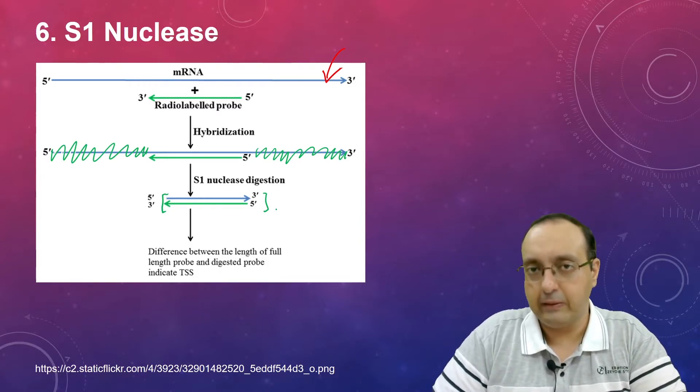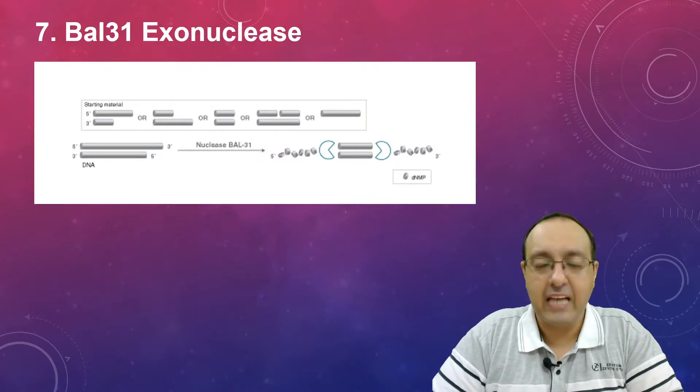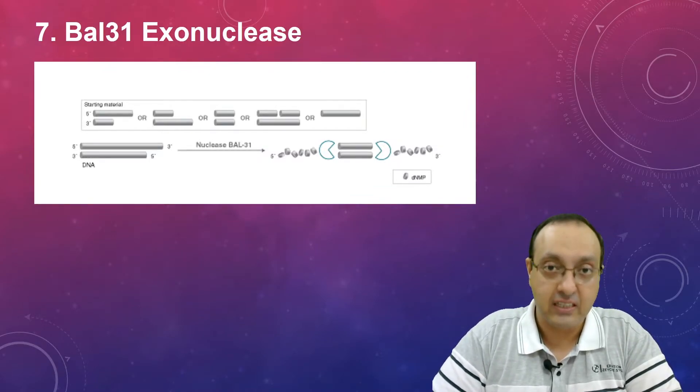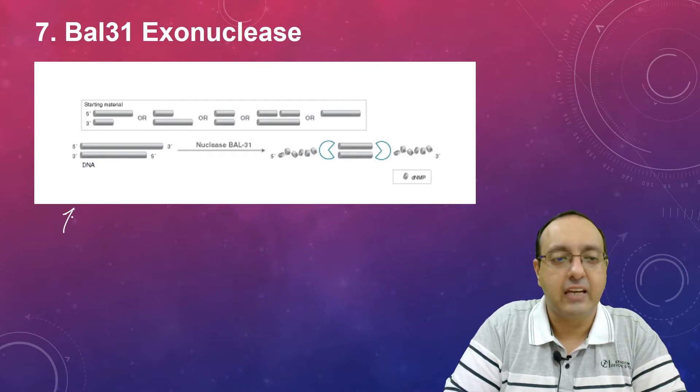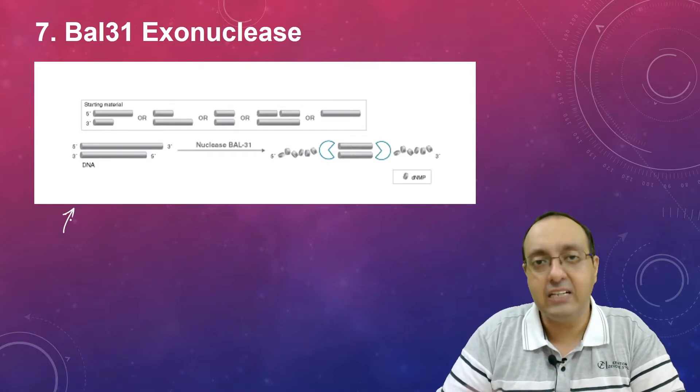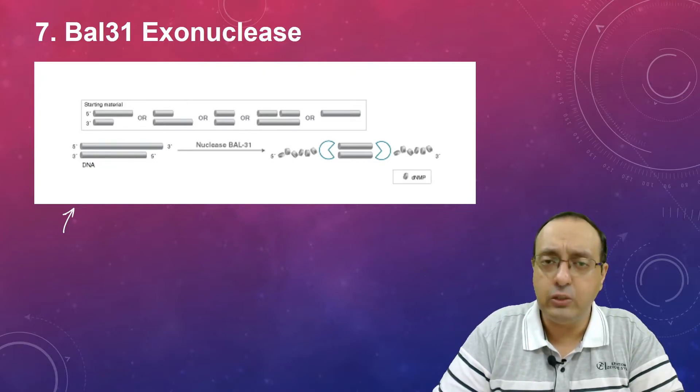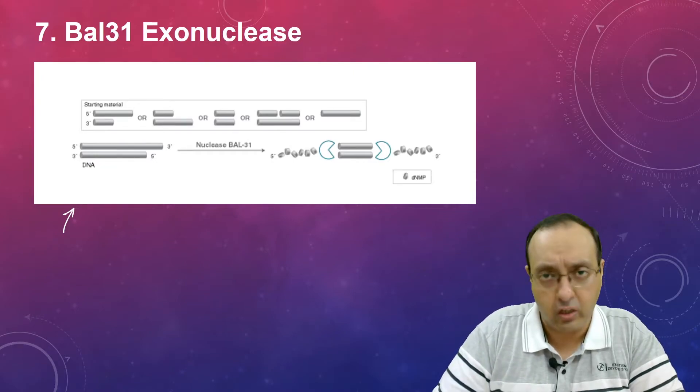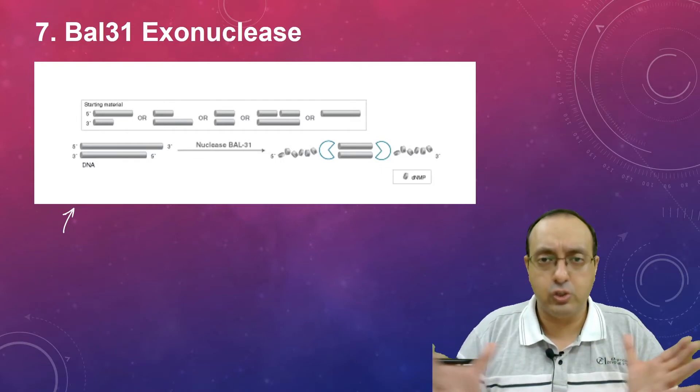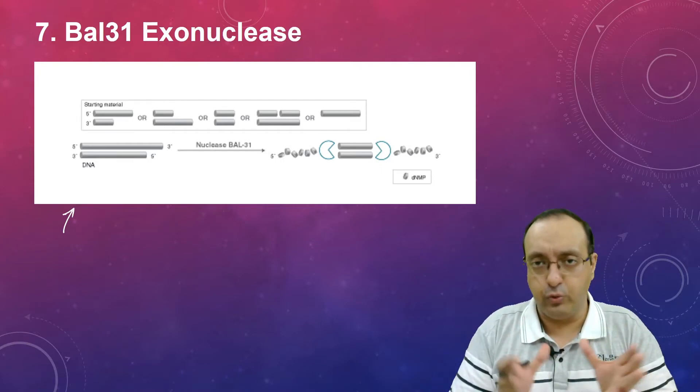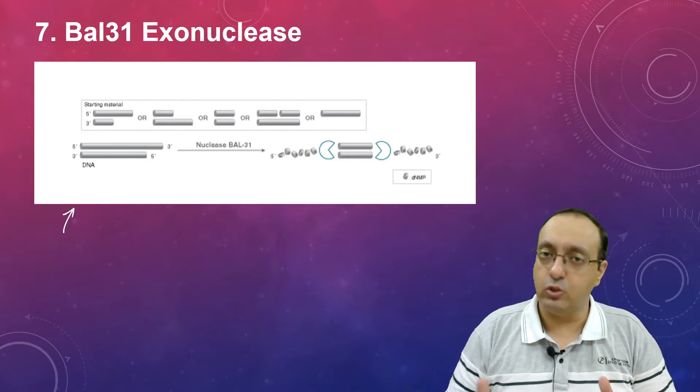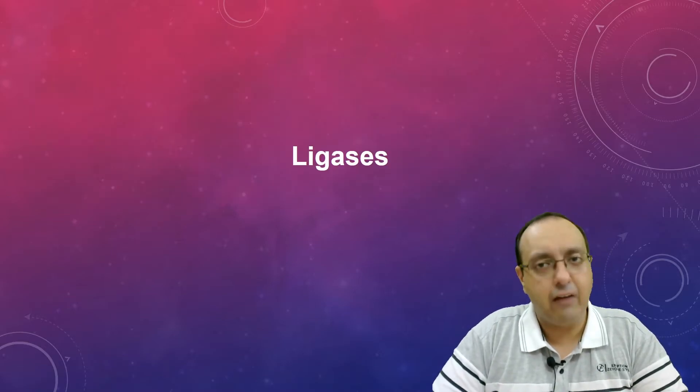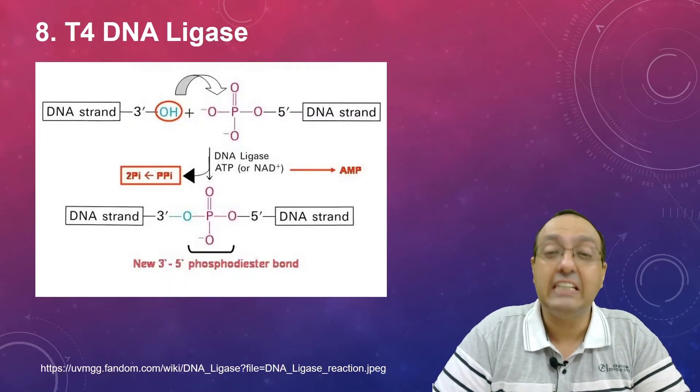Coming to enzyme number seven, which is Bal 31 exonuclease. This is a DNA and RNA specific exonuclease. As we already talked about, different exonucleases can target both ends of the DNA molecule, so it is routinely used for progressive shortening of DNA ends. If you want a smaller DNA fragment, if you want to chew it up, use it for cloning or other purposes, then Bal 31 exonuclease is used.